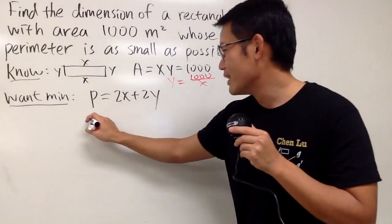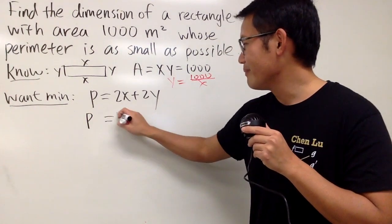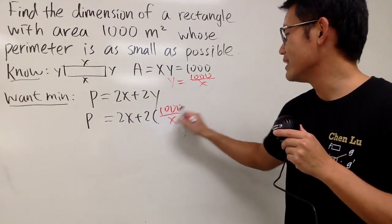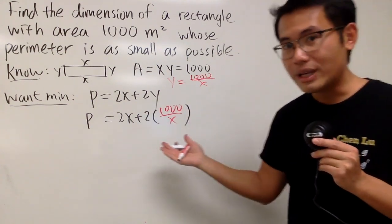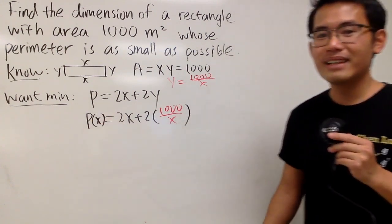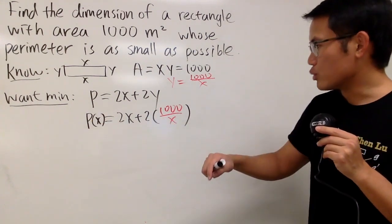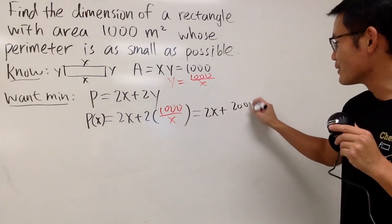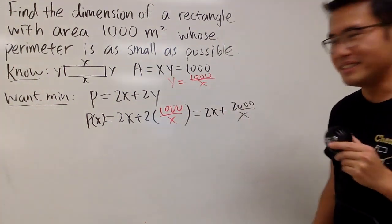So, have a look. We get P is equal to 2x plus 2, and the y is just 1000 over x, like this. And now we have a function in terms of just x, so this is P of x, like that. And before we do the derivative, perhaps I will multiply this out. This is just 2x plus 2000 over x. It's easier this way.